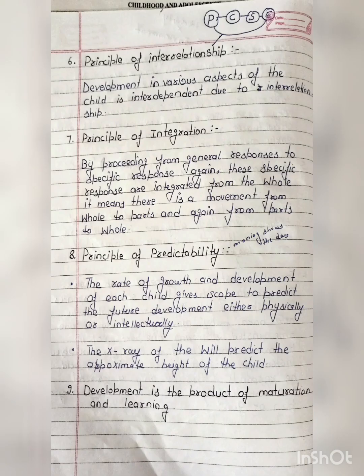The sixth principle is the principle of interrelationship. Development in various aspects of the child is interdependent due to interrelations — like the child's physical development, cognitive development, social development, and emotional development are all interrelated.